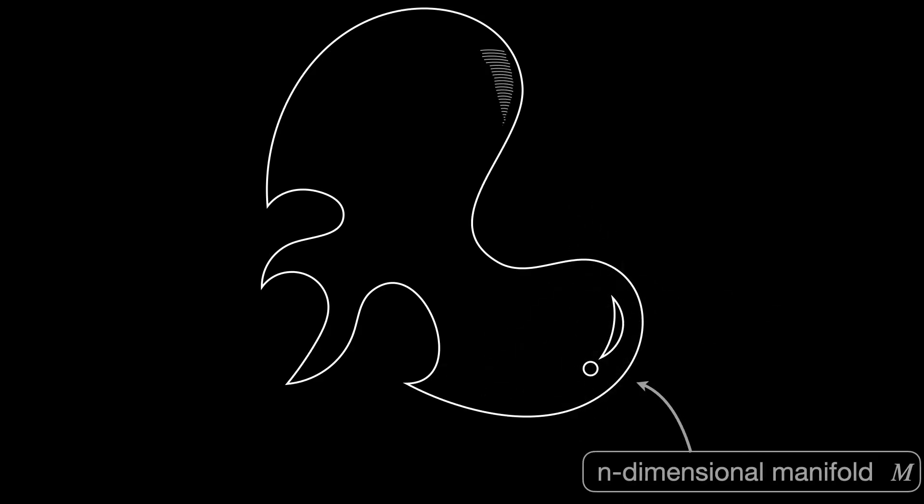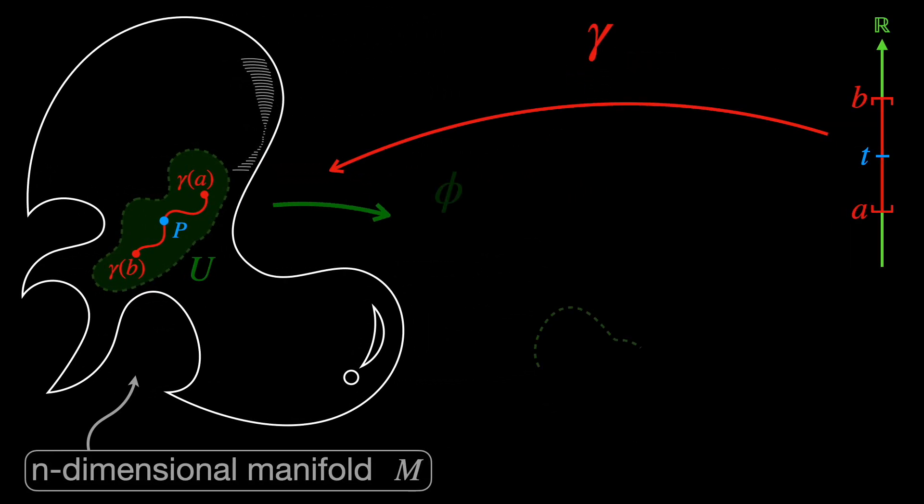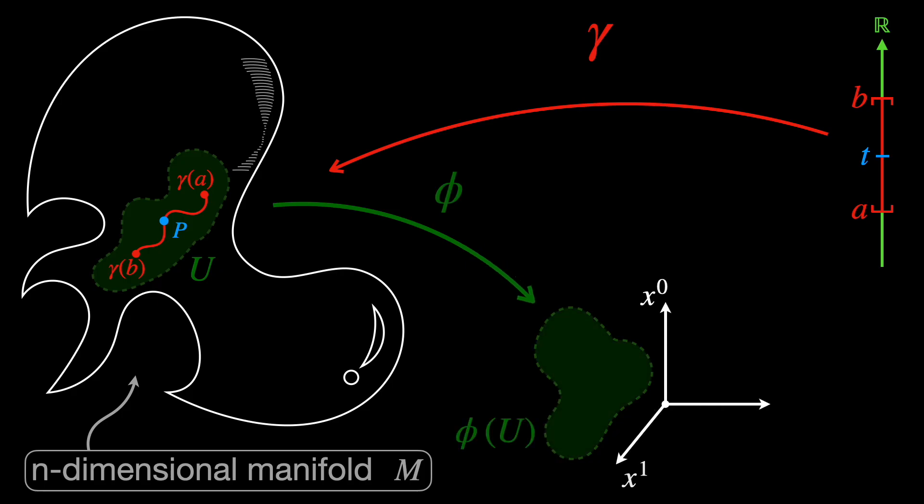Picture an abstract manifold M with dimension N not embedded in a higher dimensional space like Rn. Then we pick a point P in it and a small neighborhood U around the point P. We can define a parameterized curve passing through P, called gamma of T, that goes from an interval AB in R to M. Its image in M is the interval gamma of A, gamma of B. Let's also impose that the entire curve is inside the neighborhood U. Next, we define a mapping phi from the neighborhood U in the manifold to Rn, with image phi of U in Rn. N is the dimension of the manifold M, as well as the dimension of the Euclidean space Rn.